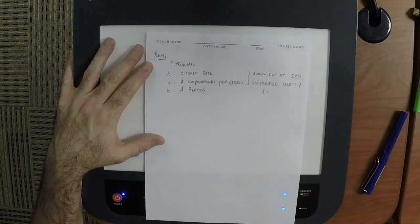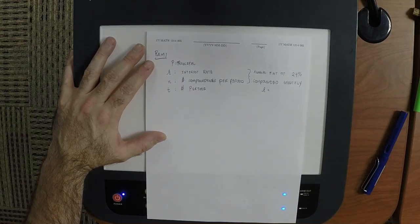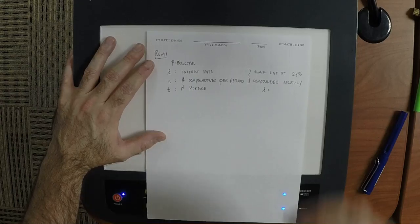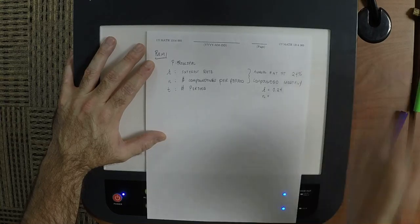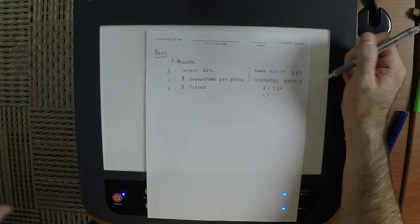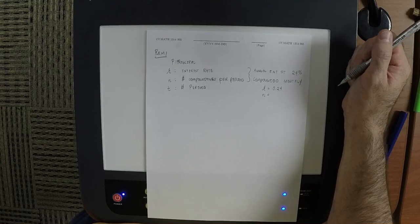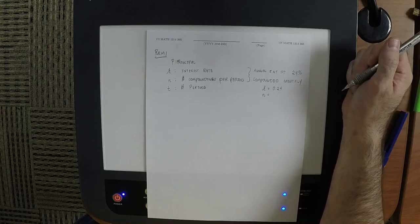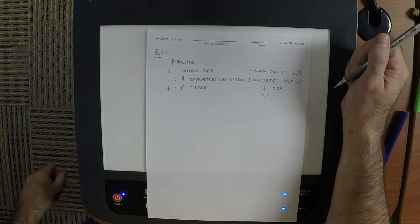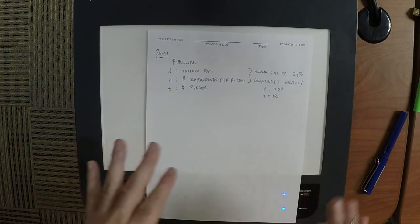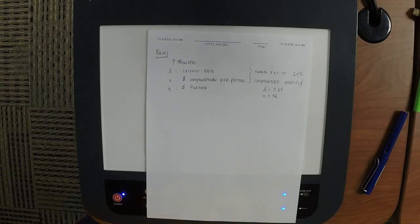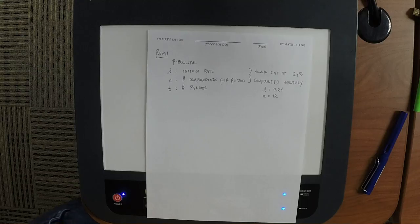To make this clear with an example: if the annual interest rate is 24% and it is compounded monthly, then R is 0.24. The fact that it says annual interest rate means the period is one year, and if compounding is monthly, N is 12, because there are 12 months in a year.